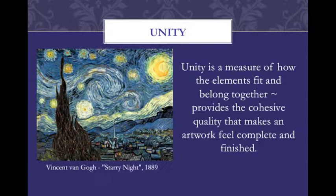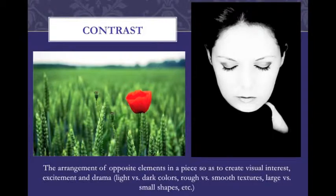Unity is a measure of how the elements fit and belong together. It provides the cohesive quality that makes an artwork feel complete and finished, as in Van Gogh's painting 'Starry Night.' Contrast is the arrangement of opposite elements in a piece so as to create visual interest, excitement, and drama — for example, light versus dark colors, rough versus smooth textures, or large versus small shapes.